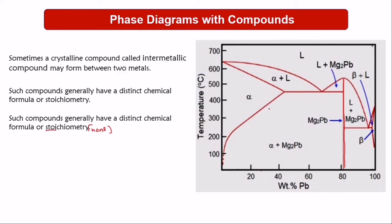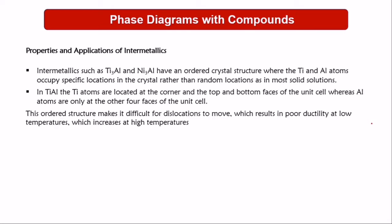When labeling the phase diagram, we have liquid here and alpha here, so between them it will be liquid plus alpha. This metal is magnesium lead. The labeling near the stoichiometric intermetallic compound will be liquid plus the compound. And on the other side, where we have beta, it will be liquid plus beta.